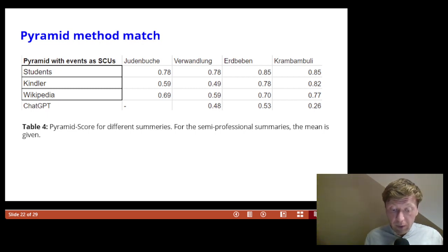You can see the summary scores here in table 4. The pyramid scores range from 0 to 1, where 1 is a perfect summary. Unlike the other methods, ChatGPT performs poorly here, which may be due to the content-focused comparison method.